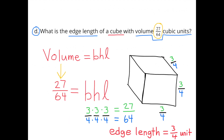D: What is the edge length of a cube with a volume of 27/64 cubic units? The volume of a cube is base times height times length, and this volume is 27/64. So what number multiplied by itself 3 times equals 27? And what number multiplied by itself 3 times equals 64? 3 times 3 times 3 equals 27, and 4 times 4 times 4 equals 64. So the edge length would be 3/4 of a unit.